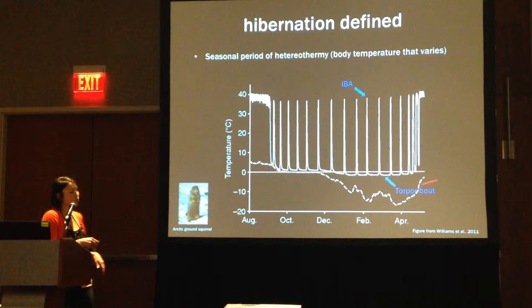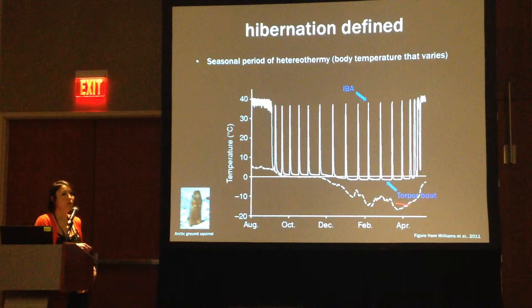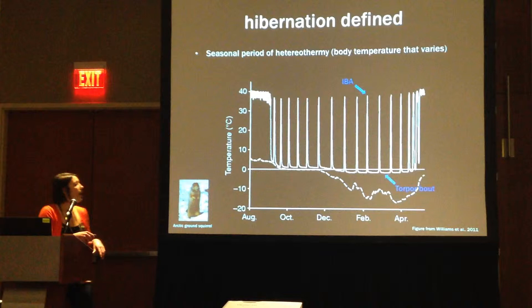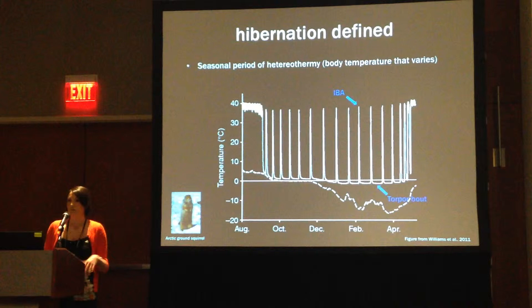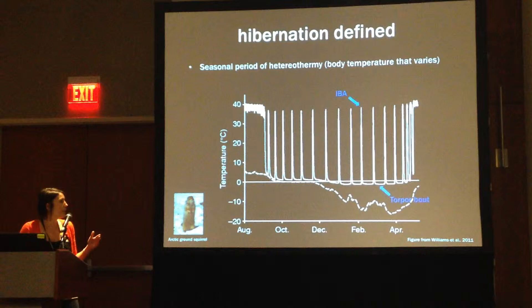The hibernation period is comprised of multiple torpor bouts. I'd also like to point out that this dotted line is soil temperature taken from a data logger placed near the animal while in hibernation. You can see there's a temperature differential between body temperature and soil temperature. This is due to the fact that hibernation is an active process — it's not just a passive lowering of body temperature due to ambient or soil temperature. Body temperature is actively defended at a lower set point.